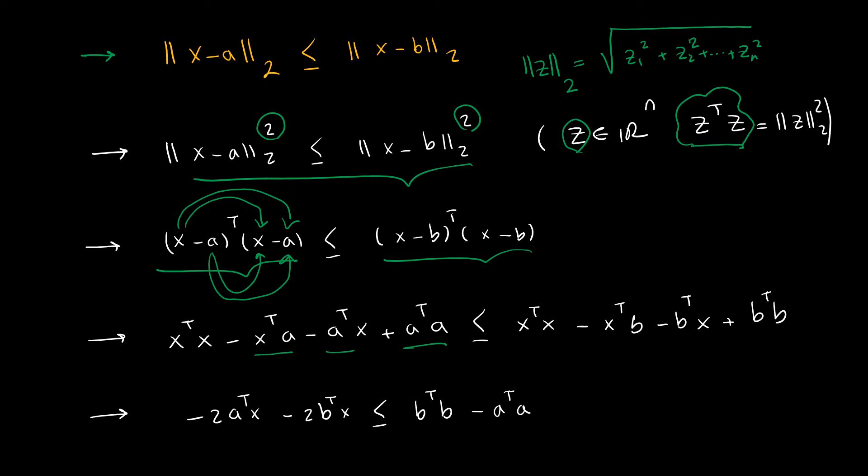We can do the same thing for the right hand side. Now look at the third and second term. These two are scalars and I can flip the order and write a transpose times x, and also here I can write b transpose x.